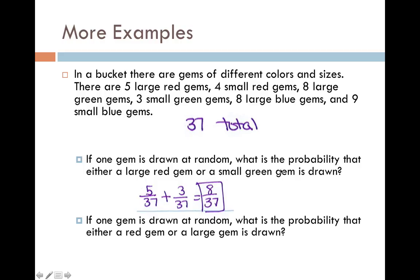Now let's do a different scenario, or a different question with this scenario. Again, one gem drawn. But now I want to know the probability that it's either red or large. This one is not mutually exclusive. You can be both red and large at the same time. So I'm going to have to subtract.